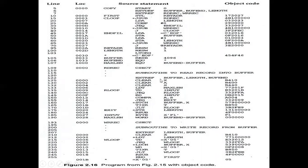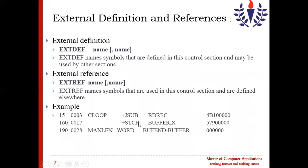We see again a subroutine to read a record into the buffer and a subroutine to write code from the buffer. The CSECT statement is an assembler directive that signals the start of an external section — indicating that your subroutine is being started from that point.